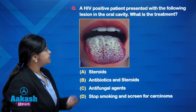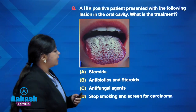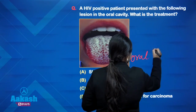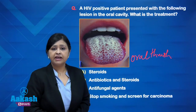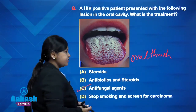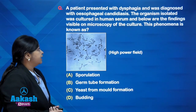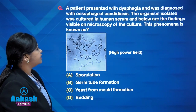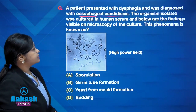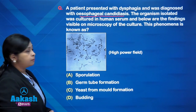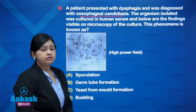Here is another AIMS image-based question: An HIV-positive patient presented with a lesion in the oral cavity — this is a case of oral thrush. The treatment involves antifungal agents, specifically the azoles. Another question: A patient presented with dysphagia and was diagnosed with esophageal candidiasis. The organism isolated was cultured in human serum and findings were visible on microscopy. We will answer this once we discuss the laboratory diagnosis of Candidiasis, which also features image-based questions asked in AIMS.